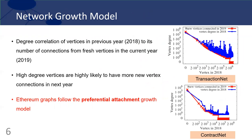The plot shows the degree value of a vertex in 2018 versus its number of new connections from fresh vertices in 2019. We see that if in the previous year a vertex has a high degree value, it is highly likely that in the current year it would have more new vertices to connect to. This indicates the Ethereum network follows the preferential attachment growth model, which means the more connections a vertex has, the more likely it is to receive new arcs.